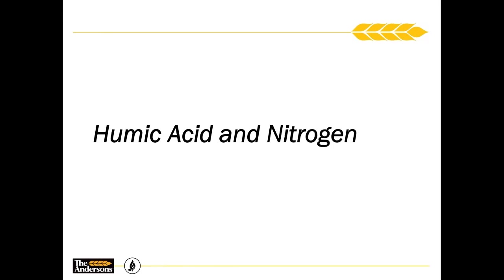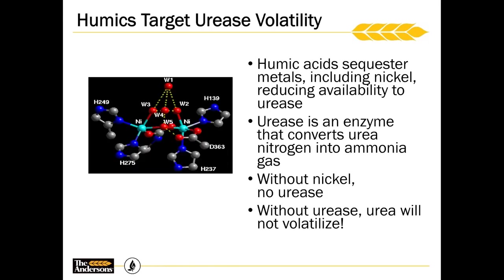That rolls us into something at the Andersons that we're very keen on — humic acids in a nitrogen application. When we think about humic acid and a nitrogen application, it's really about trying to minimize the opportunity for volatilization of that nitrogen. How we're doing that is through our humic acids. They're going to sequester metals and sequester nickel. Without nickel, you don't have urease — that ability for urease to convert our urea nitrogen over into ammonia gas.